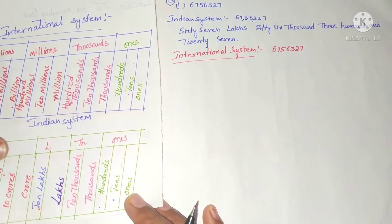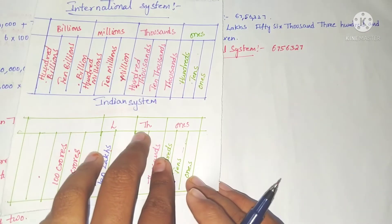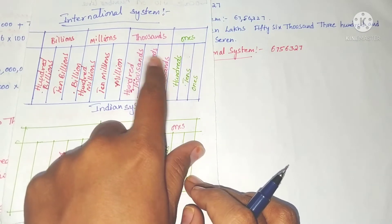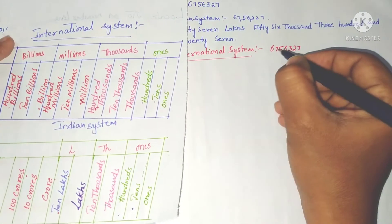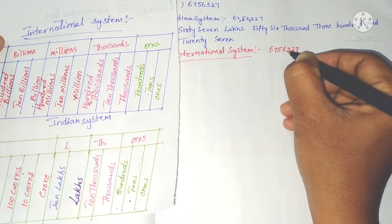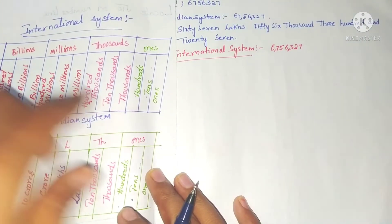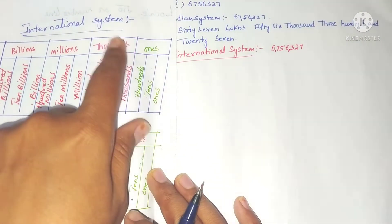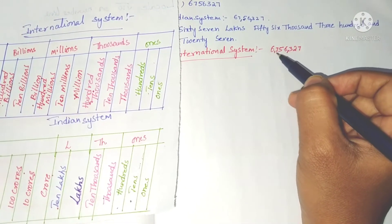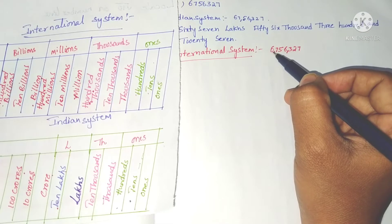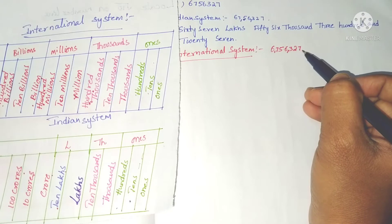Now for the same number in the international system, we place commas after every three digits. The periods are ones, thousands, and millions. So the number is: six millions, seven hundred, fifty-six thousand, three hundred and twenty-seven.